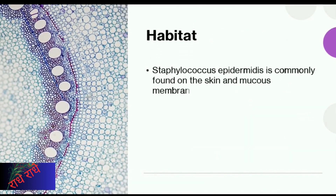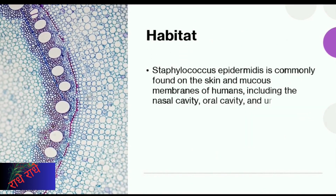Staphylococcus epidermidis is commonly found on our skin, mucous membranes, and other areas of our body including the nasal cavity, oral cavity, and urogenital tract. It is an essential part of our normal microbiota, aiding our bodies in fighting off potential pathogens that may cause harm.